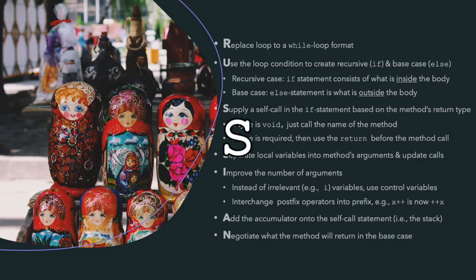The fourth step is to separate the local variables into the method's arguments and update the calls from the method. Step five improves the number of arguments by interchanging postfix operations into prefix operations, in addition to removing irrelevant variables.